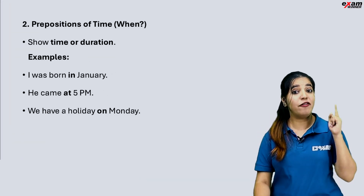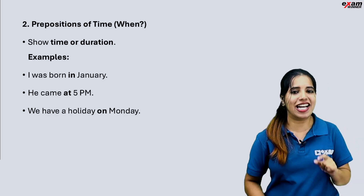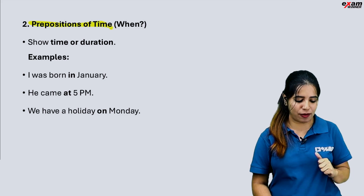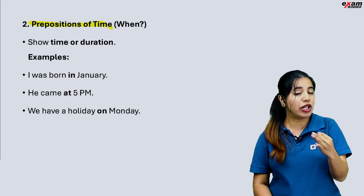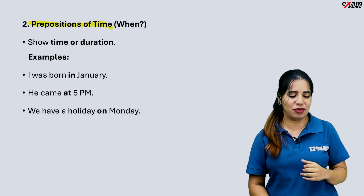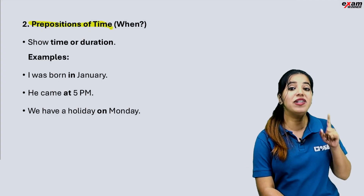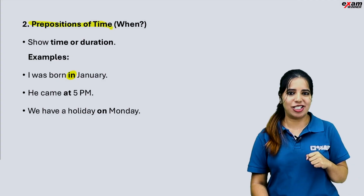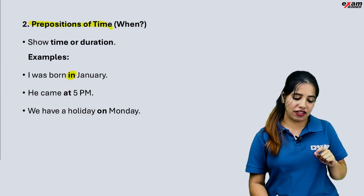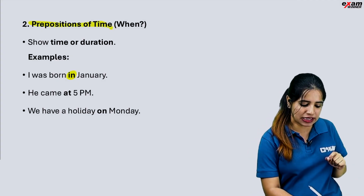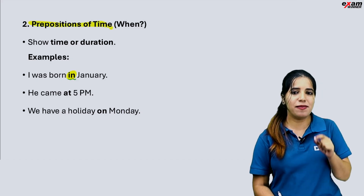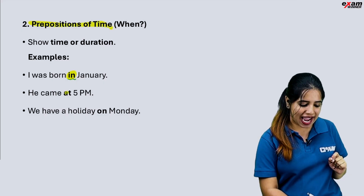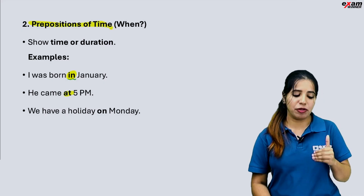Prepositions of time — you can use prepositions of time. It means duration, how much time. For example: 'I was born in January.' In January means a month. We also say 'He came at 5 pm' — that is a specific time.